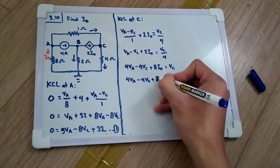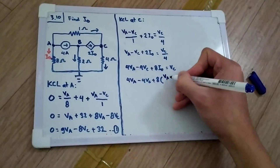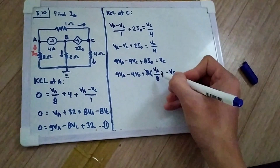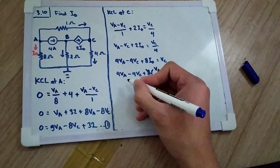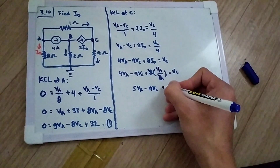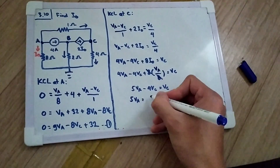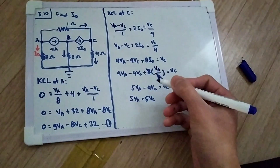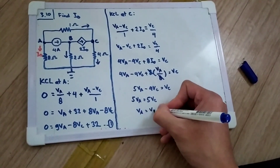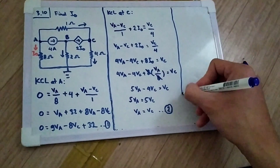We substitute I0 equals VA divided by eight. The eight cancels, giving 4·VA plus VA minus 4·VC equals VC, so 5·VA minus 4·VC equals VC, which means 5·VA equals 5·VC. Therefore VA equals VC. We call this equation two.